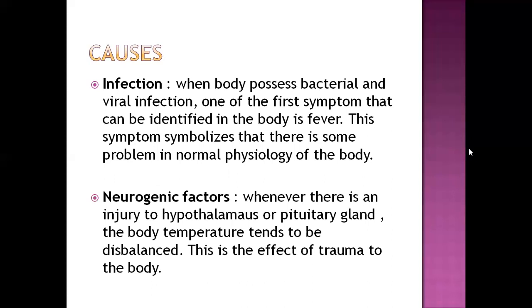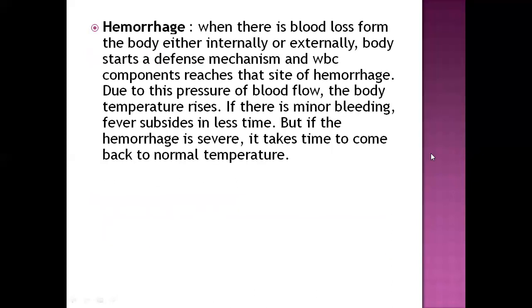Next is neurogenic factors. Whenever there is an injury or trauma to the hypothalamus or pituitary gland, body temperature can become imbalanced, because these organs centrally regulate body temperature. Next is hemorrhage — bleeding from internal body tissues. When there is blood loss either internally or externally, the body starts a defense mechanism where WBC components rush to that site to stop the bleeding. Due to that pressure of blood flow, body temperature can slightly rise and fever can occur.